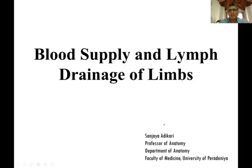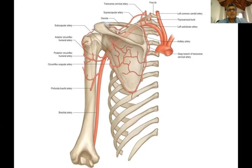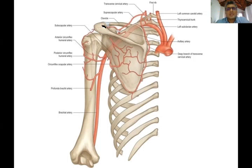Today we are going to discuss blood supply and lymph drainage of the limbs. We will first talk about the upper limb. This picture is a posterior view - you can recognize that by the spine of the scapula. In this diagram you can see the arch of the aorta, and this is the left subclavian artery.